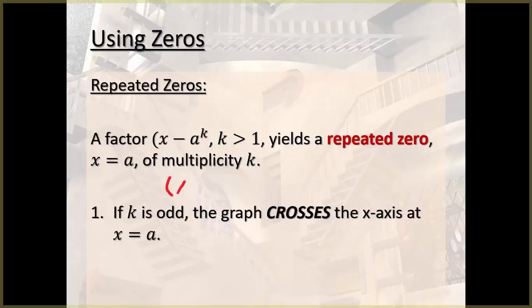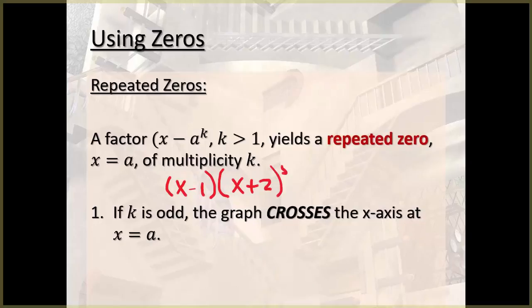All right. So if you had x minus 1, x plus 2 to the 5th. Okay. The multiplicity here and here, 1, 5, they're both odd. They both have an odd multiplicity.